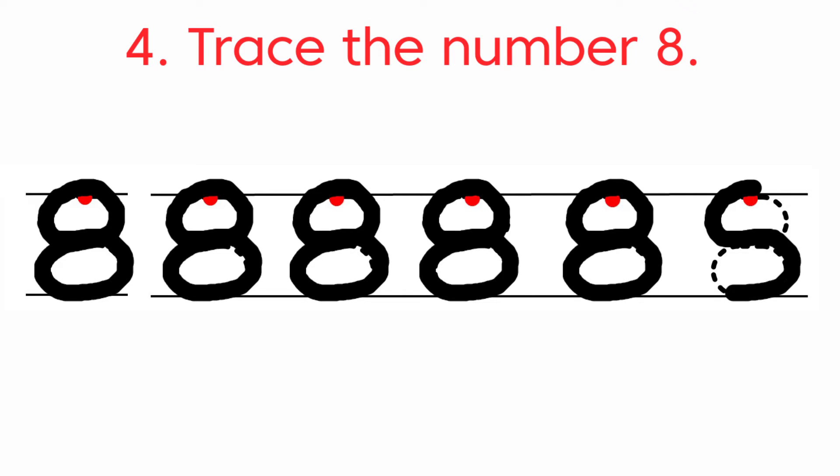Starting from the red dot, we are going to draw a forward curve, then facing down a backward curve. From down we draw a backward curve, then facing up a forward curve, and then a backward curve at the top. This is how we write number 8.